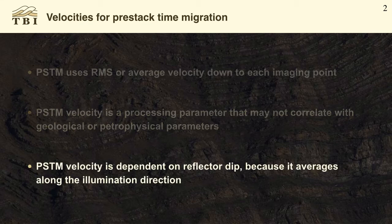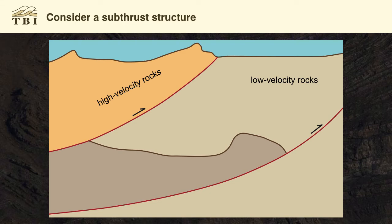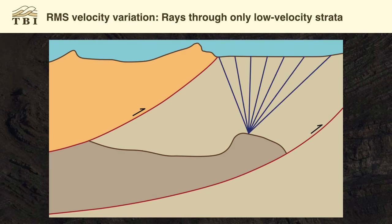PSTM velocity is dependent on reflector dip because the averaging happens along the illumination direction. Here's an example that shows this averaging phenomenon. If we consider the subthrust structure in brown in the deep section here, to the right we've got low velocity rocks above the target, and on the left we've got high velocity rocks thrust to surface on a major overthrust. On the top of the structure, we can illuminate it with rays that only pass through the low velocity strata, so the average velocity down to that reflector is basically going to be the velocity in the tan area.